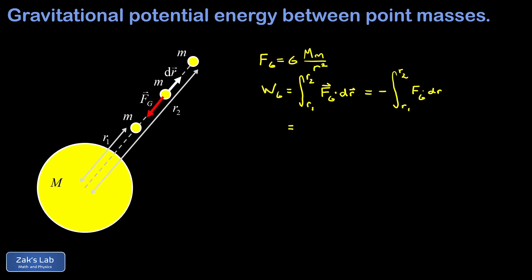Now we can plug in Newton's law of gravitation. I'll just move the constants out in front. So I have negative G big M little m times the integral from R1 to R2 of 1 over R squared dr.